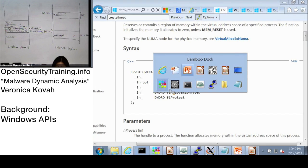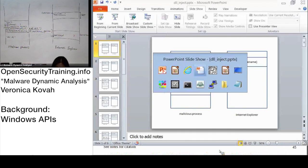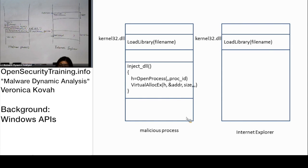All that's happening in user space. Kernel32.dll is a DLL used by user land processes. Underneath VirtualAllocEx, there is a system call. Kernel32 is actually allocating the memory for you. We can show you later the API calls going from kernel32.dll into the kernel.